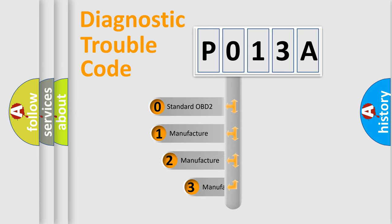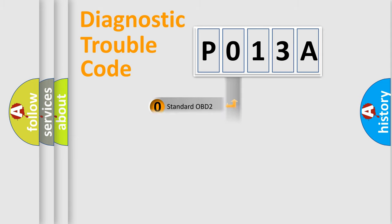If the second character is expressed as zero, it is a standardized error. In the case of numbers 1, 2, 3, it is a more prestigious expression of the car specific error.